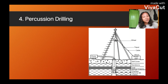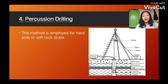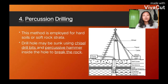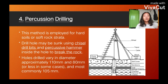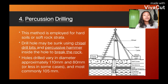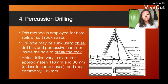The last method is percussion drilling. This method is employed for hard soils or soft rock strata. Bore holes may be sunk by chisel drill bits and a percussion hammer inside the hole to break the rock. Holes will vary in diameter, approximately 110 millimeters and 80 millimeters or less in some cases, and most commonly 105 millimeters.